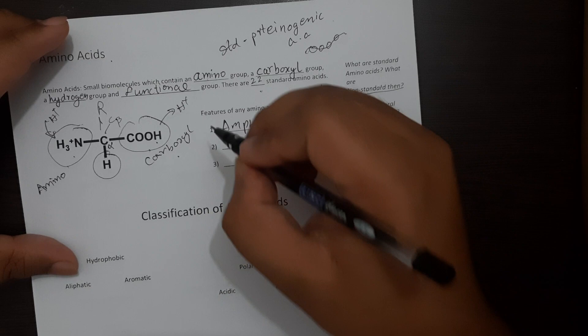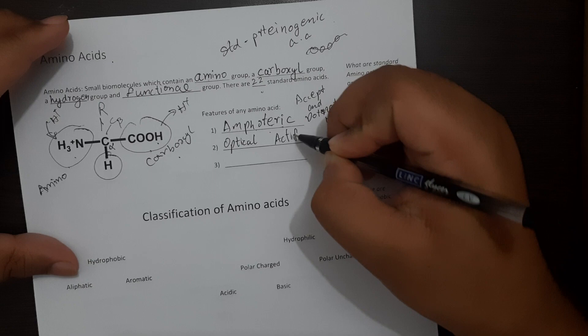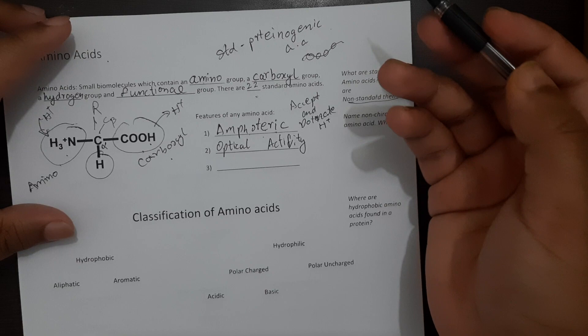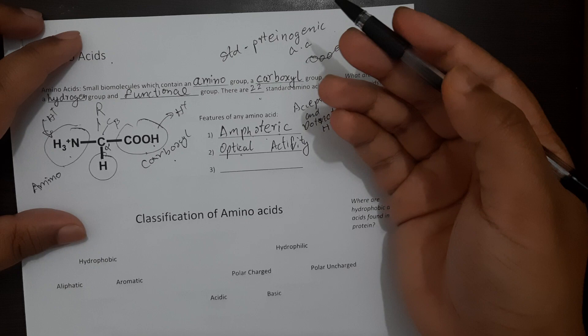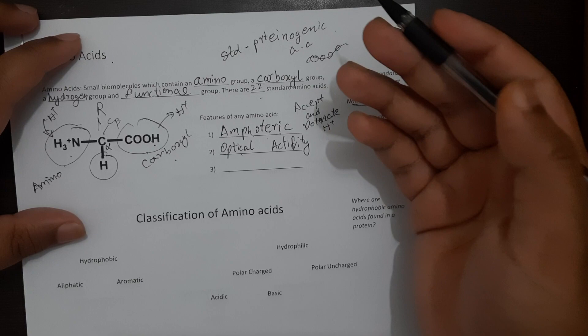The second major property of an amino acid is optical activity. Optical activity is defined as the ability of the molecule to rotate plane polarized light. Another meaning is that optical amino acids are chiral in nature. Only chiral molecules have the ability to change the direction of plane polarized light.